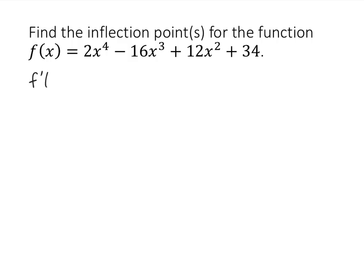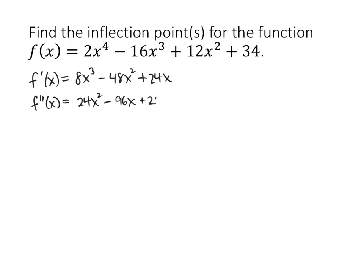To find f double prime, we've got to start by finding f prime. When we take the derivative of 2x to the fourth, we get 8x cubed. Derivative of 16x cubed is 48x squared. Derivative of 12x squared is 24x, and the derivative of 34 is 0. That's f prime, so f double prime is the derivative of f prime, which is going to be 24x squared minus 96x plus 24.